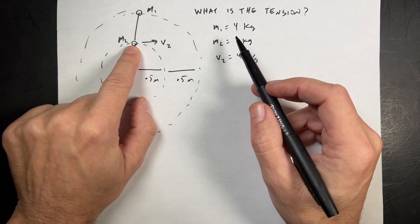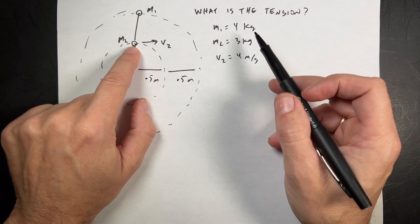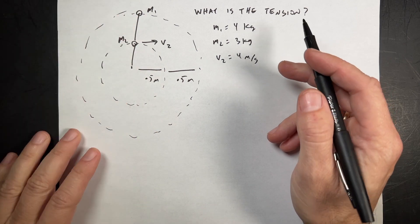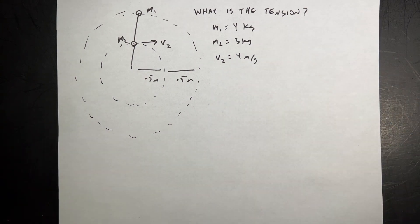Mass 2 has a velocity of 4 meters per second at this point. Both the strings from the center to there and from here to there, both half a meter, 0.5 meters. And the question is, what's the tension in the two strings? Great problem.